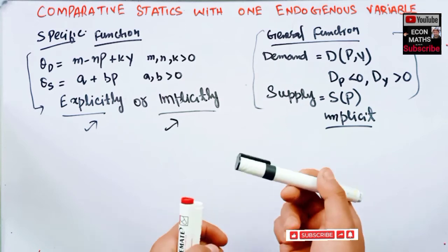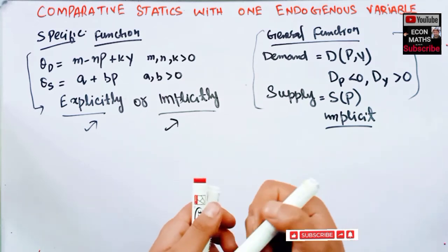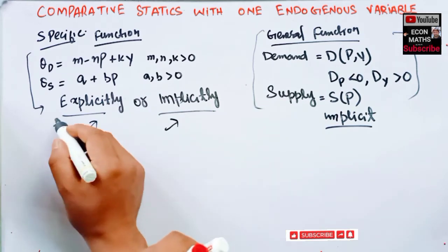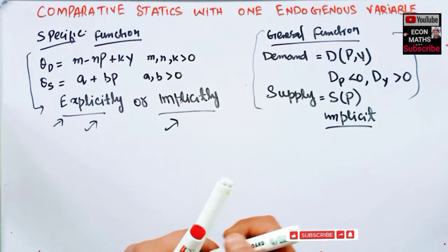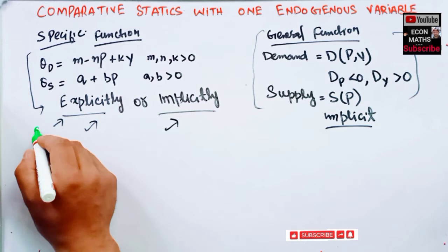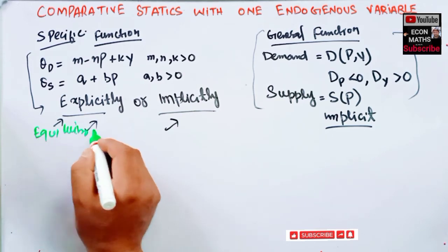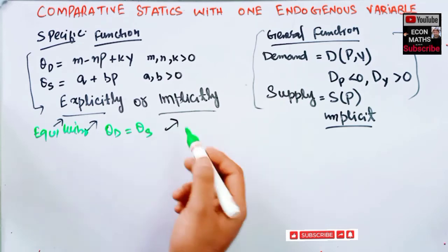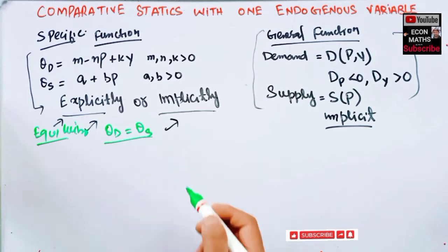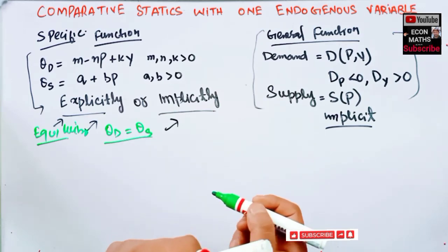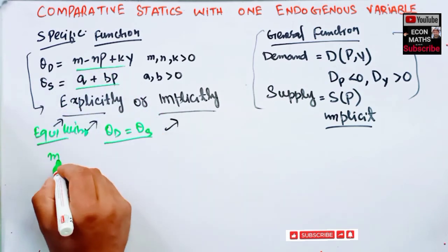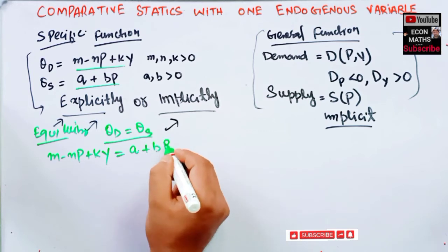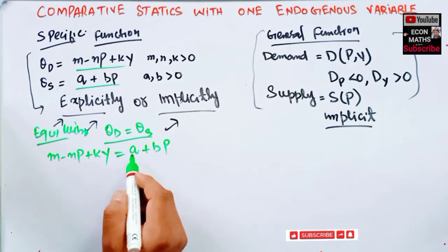Let us see how we find the equilibrium when an exogenous variable changes. Using this specific function and solving explicitly, equilibrium occurs where quantity demanded equals quantity supplied. So we equate the two functions: m minus nP plus kY equals a plus bP.